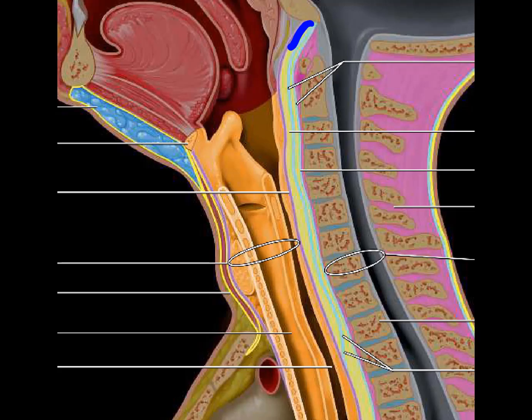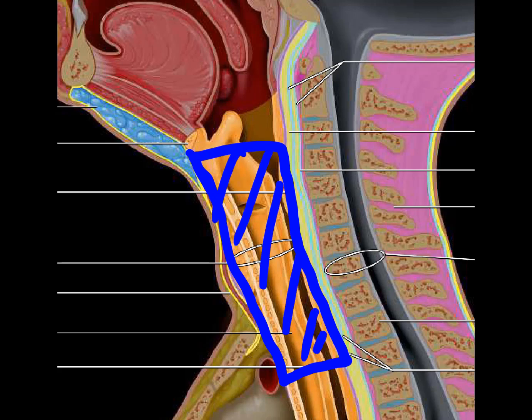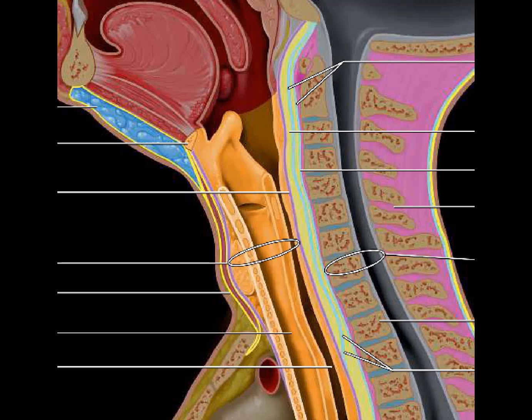This final image shows that the pre-vertebral deep space and the retropharyngeal space extend all the way from the suprahyoid region to the infrahyoid region. The visceral space, however, is only seen in the infrahyoid region and includes the thyroid gland, trachea, and esophagus. The visceral space, anterior cervical space, and posterior cervical space are exclusively present in the infrahyoid region, while the rest of the spaces extend into both infrahyoid and suprahyoid regions.